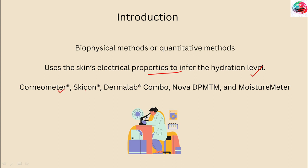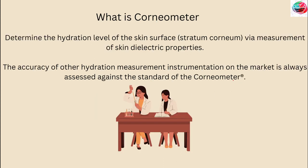Examples of such devices are the Corneometer, Skincon, DermaLab Combo, Nova DPM™, and Moisture Meter. The Corneometer is the world's most famous skin hydration measurement instrument. It is defined as an instrument that reproducibly and accurately determines the hydration level of the skin surface — that is the stratum corneum — via measurement of skin dielectric properties. The accuracy of other hydration measurement instruments on the market is always assessed against the standard of the Corneometer.